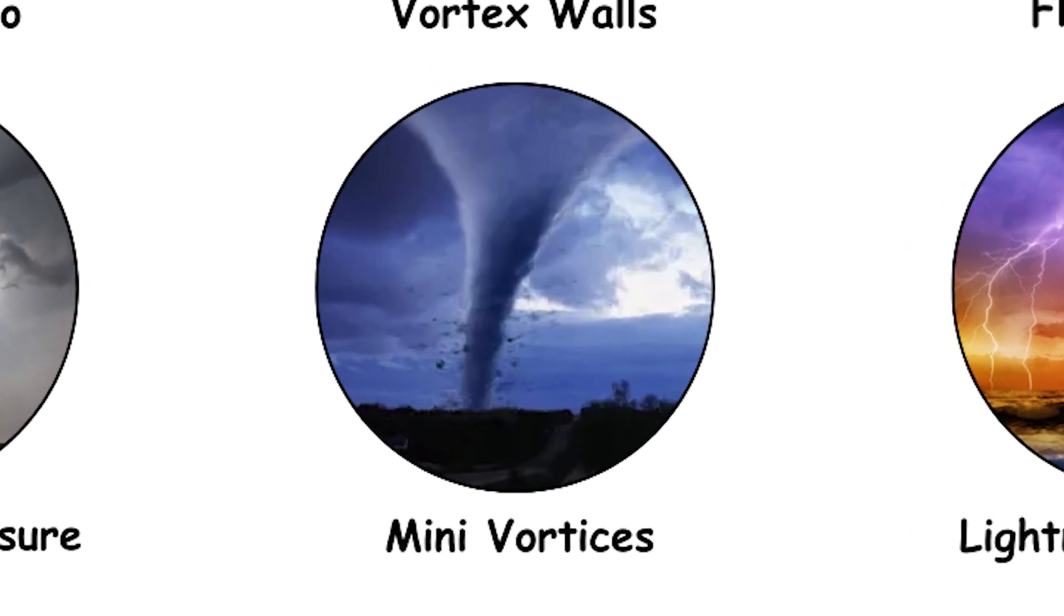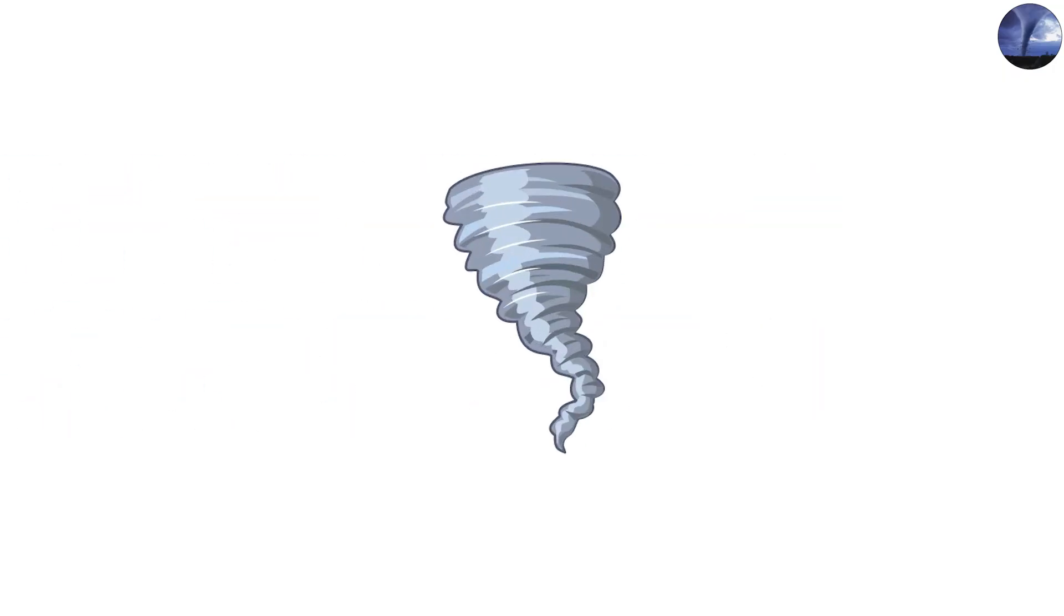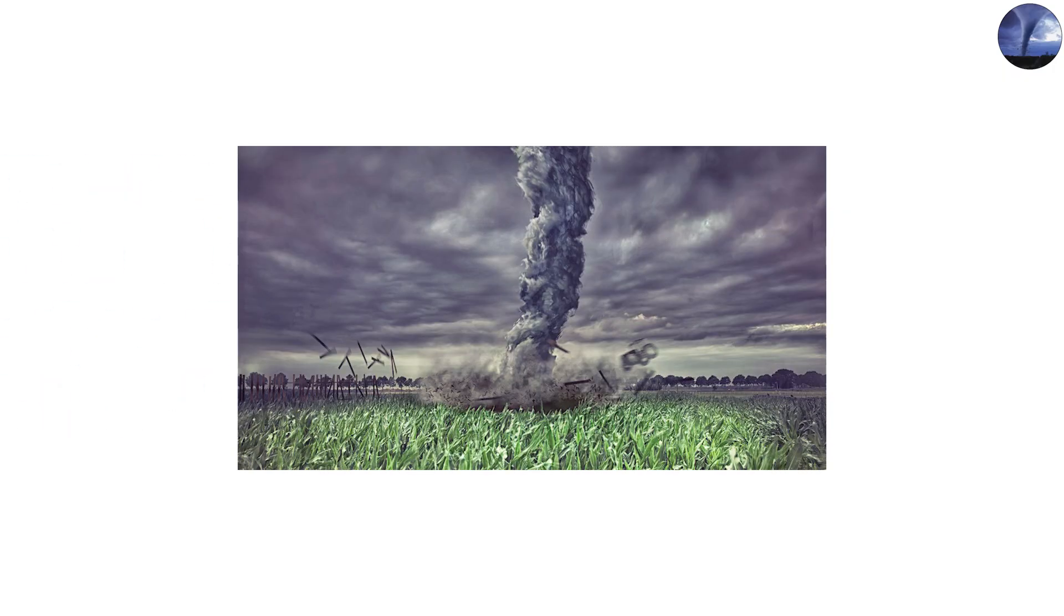Mini vortices, twisters inside the twister. Tornadoes can contain suction vortices, miniature twisters within the main funnel, which is unique and terrifying.